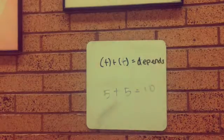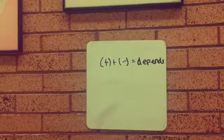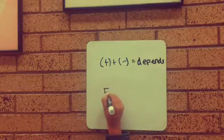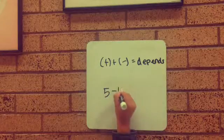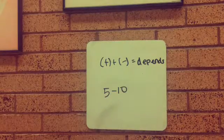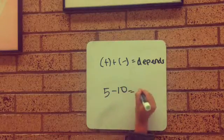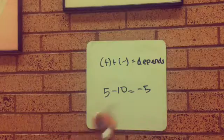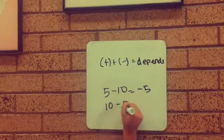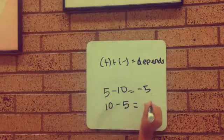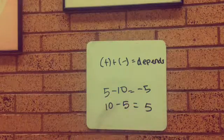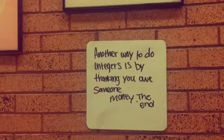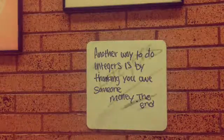A positive plus a negative depends — for example, 5 subtract 10 equals negative 5, and 10 subtract 5 equals 5. Another way to do integers is by thinking you owe someone, like...